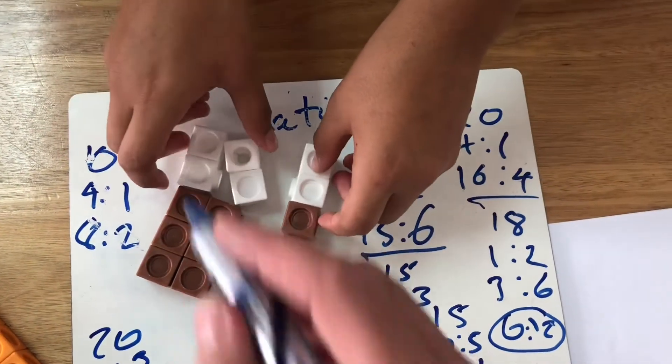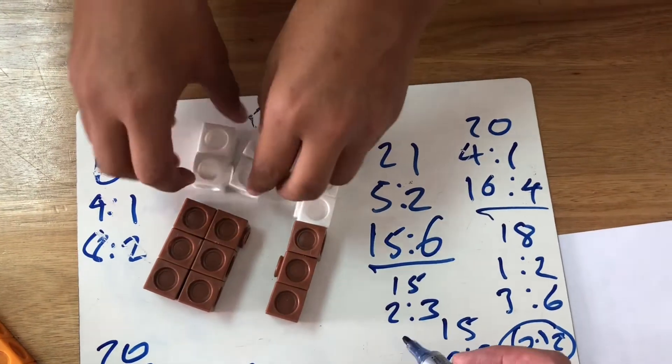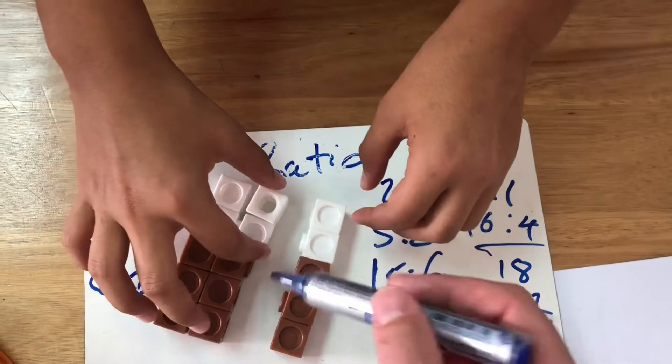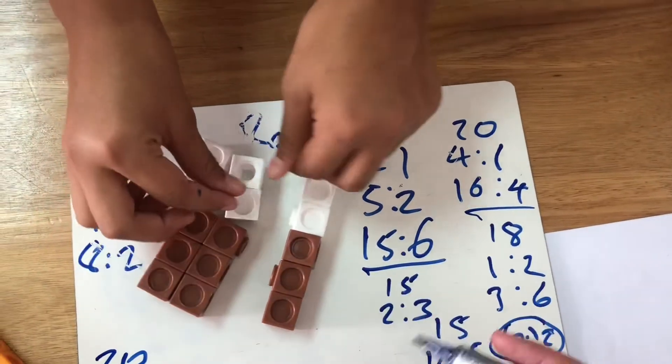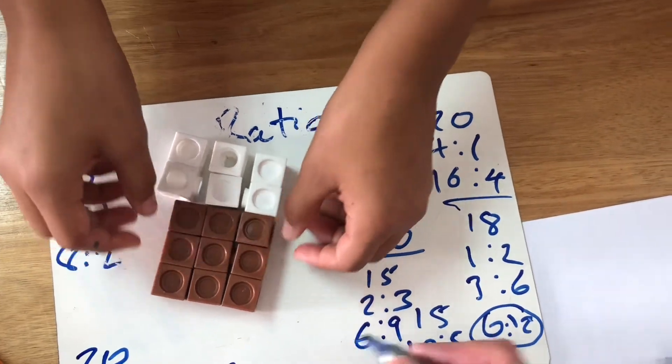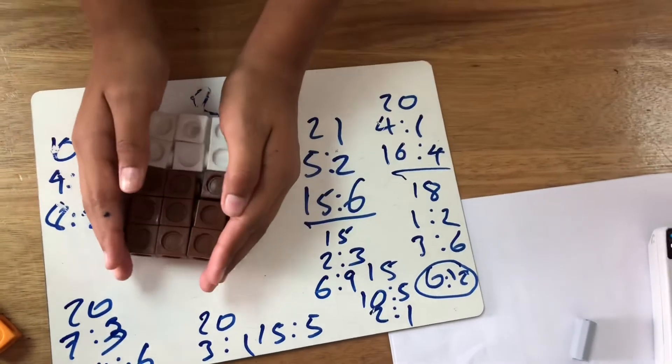So how many whites in total? For 3 browns we have 2 whites. So 3 browns, 2 whites. And how many browns in total? 6 browns. 9 browns and 6 whites. Excellent. Thank you very much.